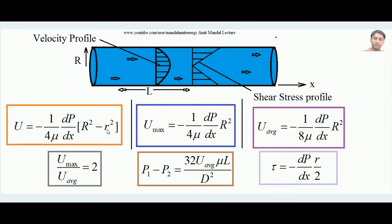Verification: when small r equals capital R, we are at the inner peripheral surface and u = 0 — confirming zero velocity at the wall. When r = 0 (the centerline), the term R² − r² is maximum, giving the maximum velocity. So u_max = −(1/4μ)(dp/dx)(R²).